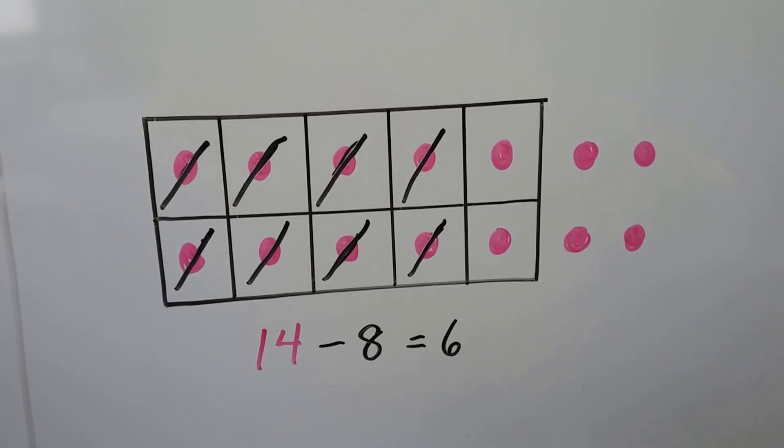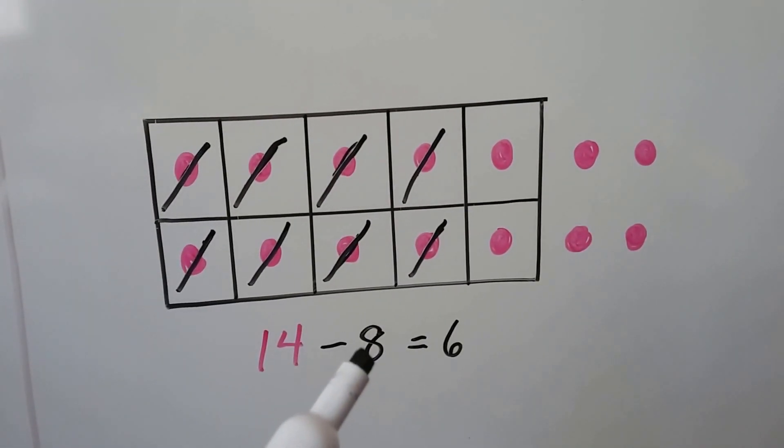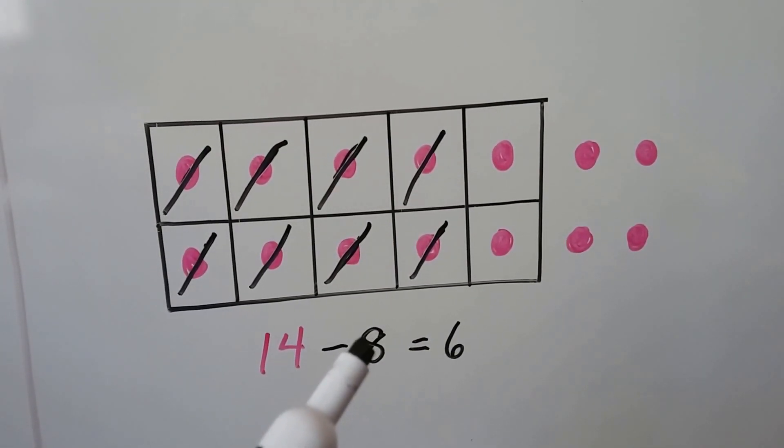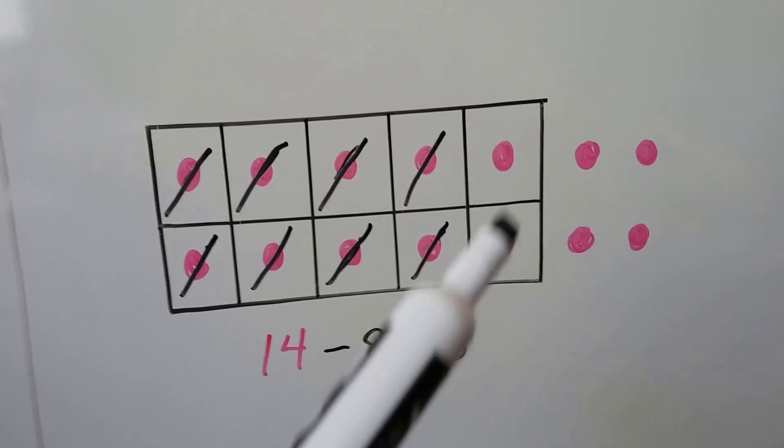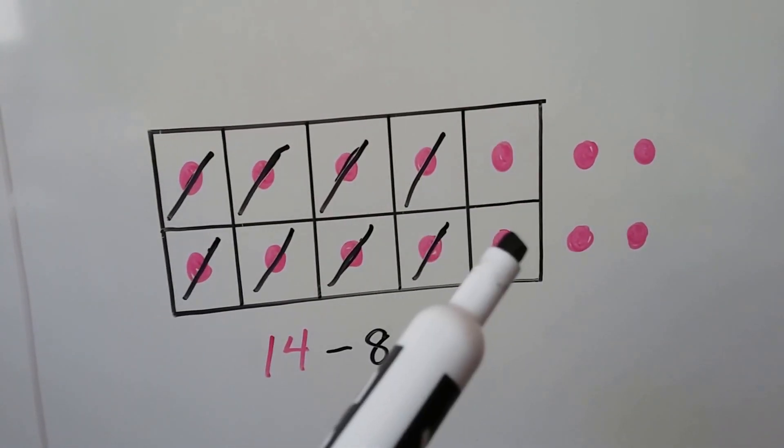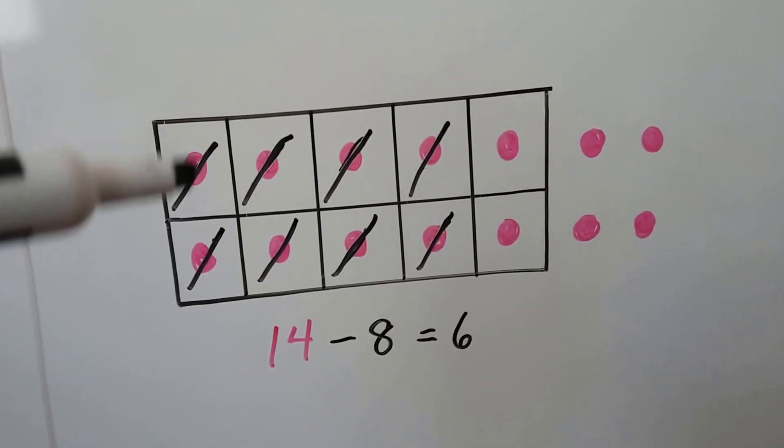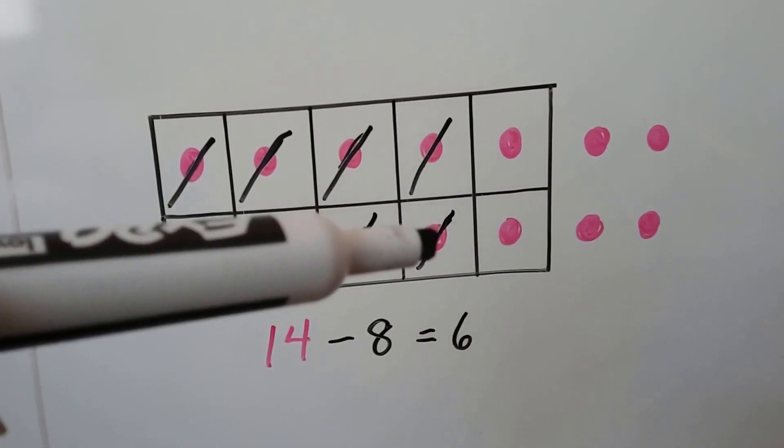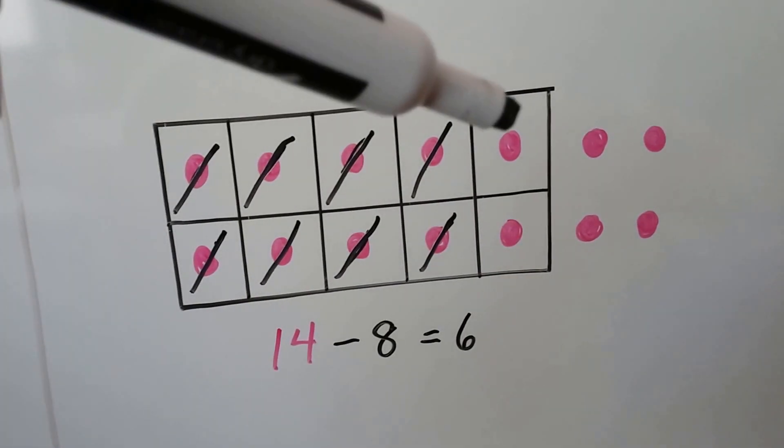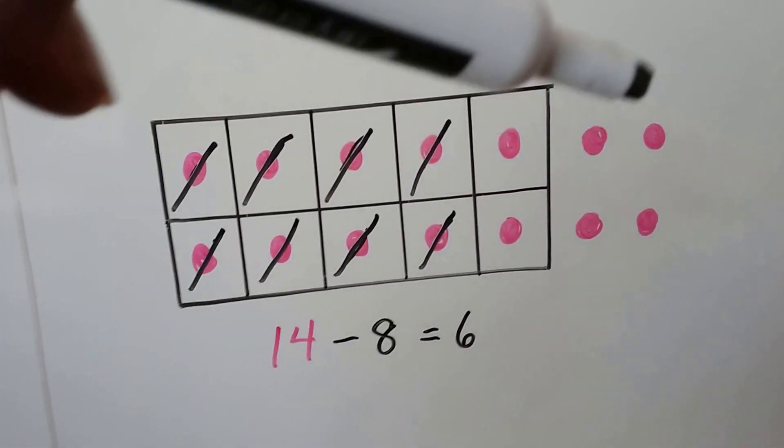Here we had 14 pink counters. We need to remove 8. 8 is 2 less than 10, so that's going to leave 2 left over in our 10 frame. We take away 8: 1, 2, 3, 4, 5, 6, 7, 8, and that's going to leave 1, 2, 3, 4, 5, 6 pink counters. 14 minus 8 equals 6.